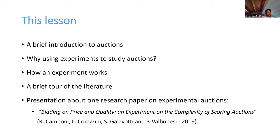Today we will first have a brief introduction to auction theory and theoretical background, because experiments are generally used to compare how people really behave with respect to theory predictions. Then we'll discuss why we should use experiments to study auctions, and have a brief tour of the experimental auction literature. Finally, I will present one research paper: bidding on price and quality, an experiment on the complexity of a scoring auction, joined with Luca Corazzini, Stefano Galavotti, and Paolo Valbonese.